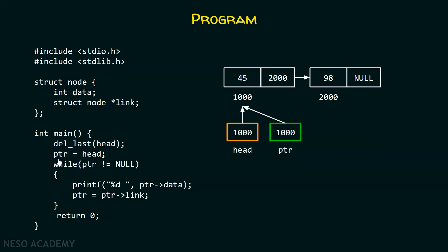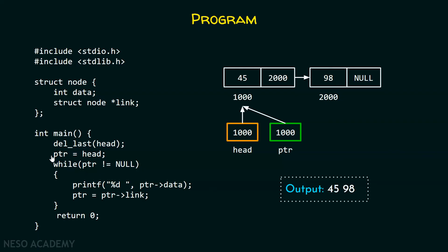I am assuming this pointer is already declared somewhere in the main function. So here I am just assigning head to ptr. I will use this pointer for traversing this list so I can print all the elements of this linked list. The output of this program is 4598 after this while loop gets evaluated.